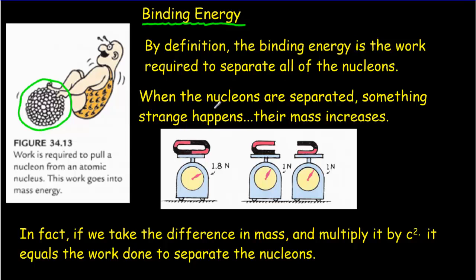Something strange happens when you separate the nucleons and that is their mass increases. And we saw that before. A free neutron has more mass than a neutron inside of carbon 12. It would kind of be like this if you had two magnets and you put them together and you got a certain scale reading. But then if you mass the magnets individually, one newton plus one newton, you get a larger mass in total. That's kind of what's going on.